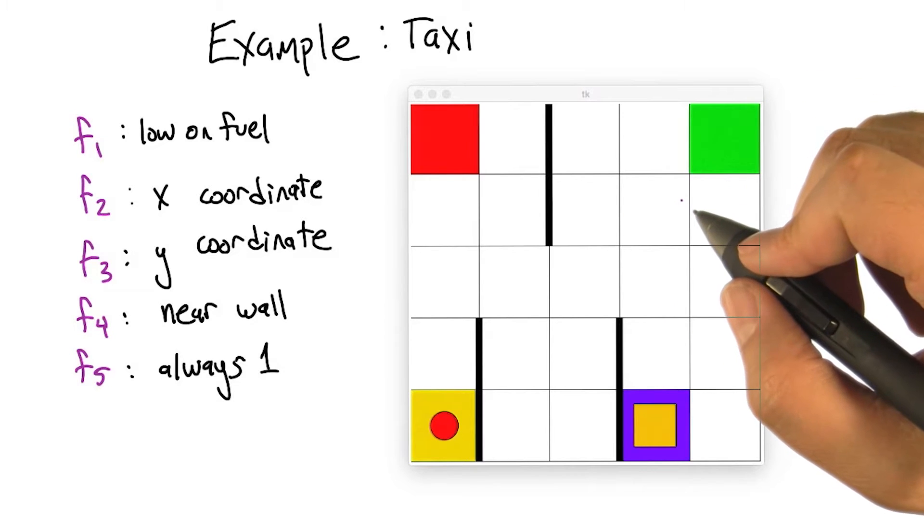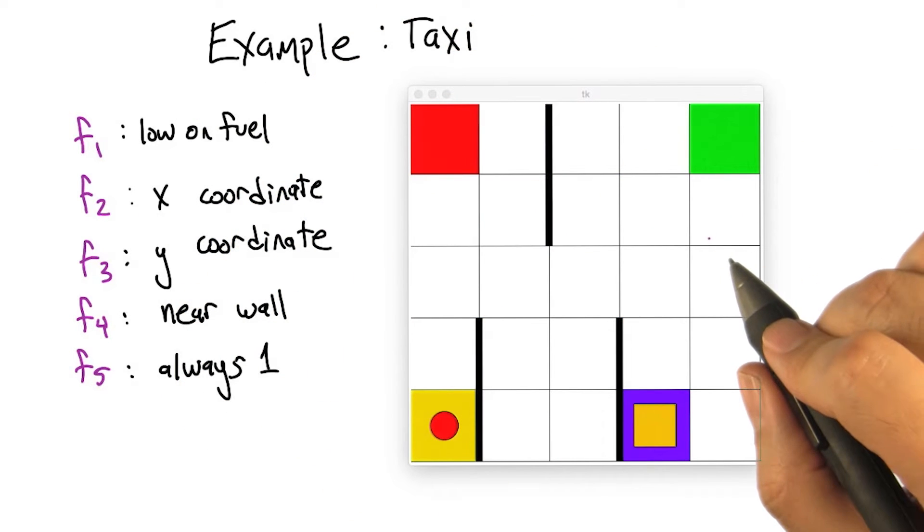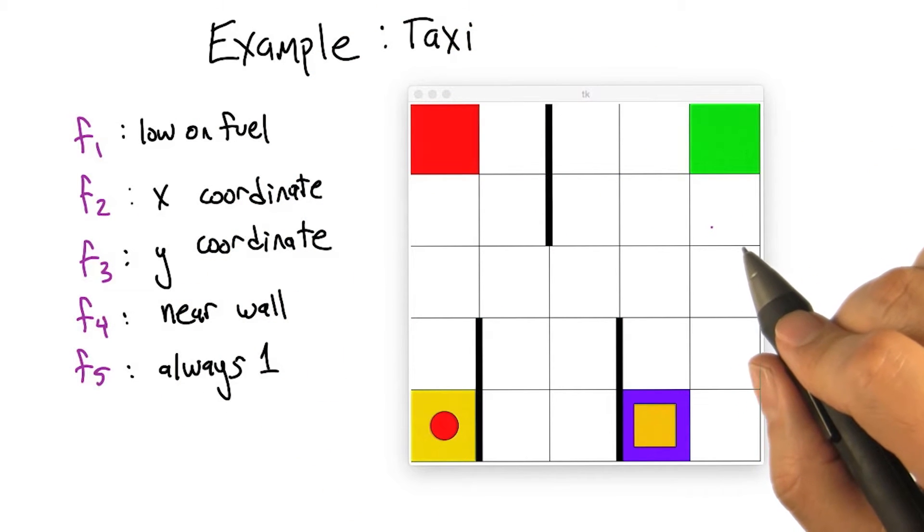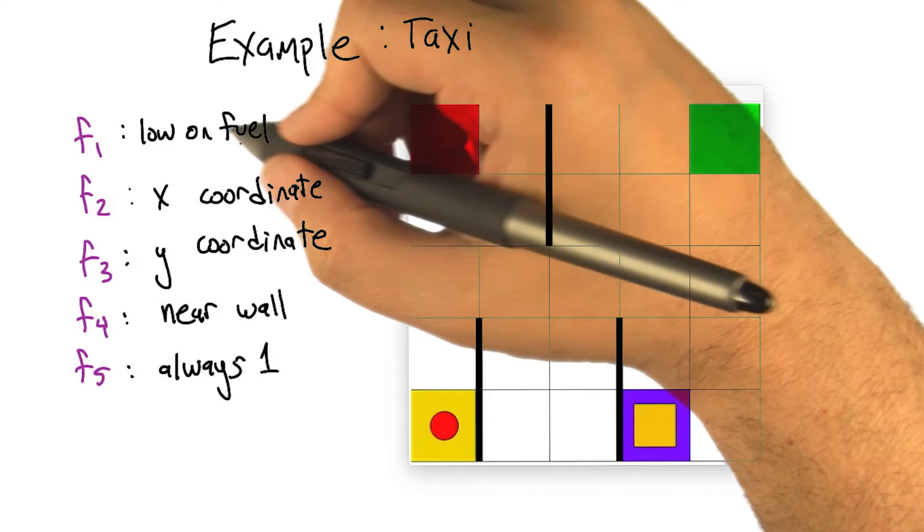So for us to be able to talk about generalization, it helps to think about states as actually being collections of features instead of just unanalyzed blobs. We're no longer going to refer to states as state 17 and state 19. We can, but I think it's helpful actually to give them additional information like these features.